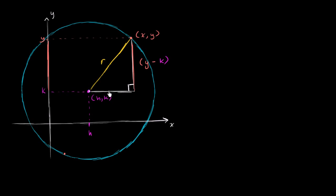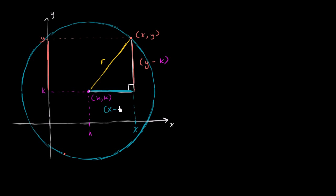And what's this horizontal distance going to be? Same exact argument. This point is h, and this point on the x-axis we can just call x. So this distance right over here is going to be x minus h.